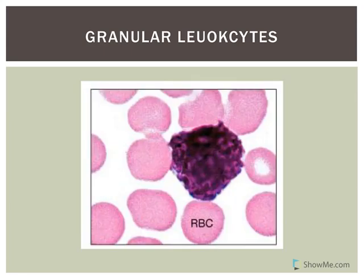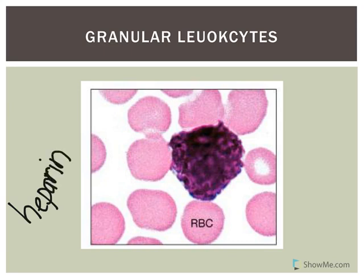The basophil is our least common of all white blood cells. Those granules release histamine, just like eosinophils. Histamine is a vasodilator — it helps improve blood flow to tissue, promoting healing, and is involved in inflammation and allergic reactions. Another substance found in those granules is heparin, an anticoagulant which inhibits blood clotting and keeps blood from clotting too quickly in areas where it isn't needed.